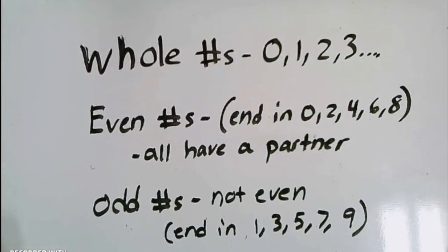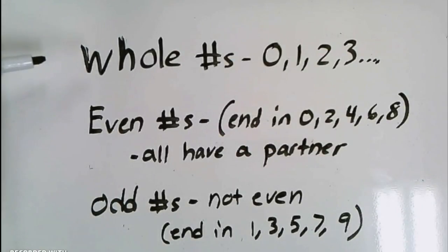All right, take out those notebooks. Time to write some vocabulary down. Your first vocab word is whole numbers: 0, 1, 2, 3, all the way up to infinity.